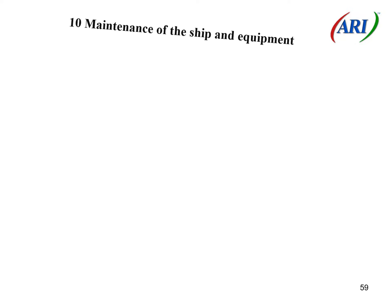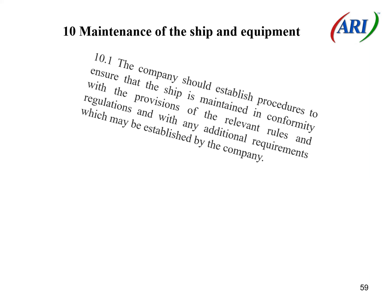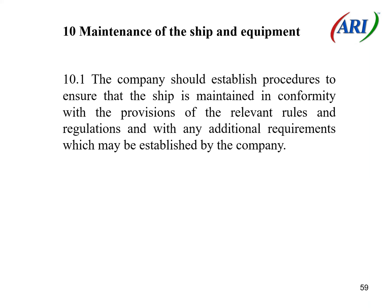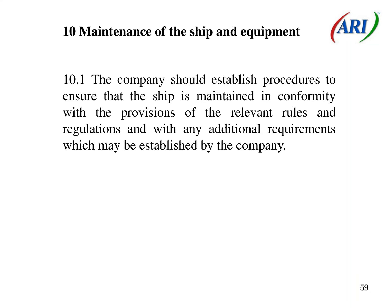Section 10: Maintenance of the Ship and Equipment. 10.1 The company should establish procedures to ensure that the ship is maintained in conformity with the provisions of the relevant rules and regulations and with any additional requirements which may be established by the company.